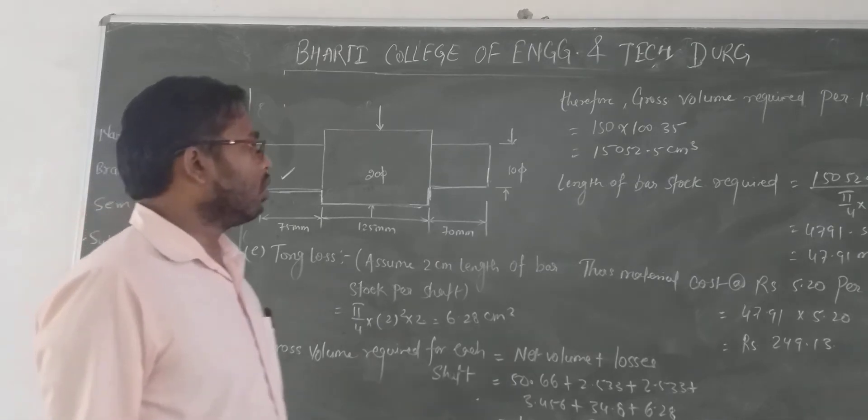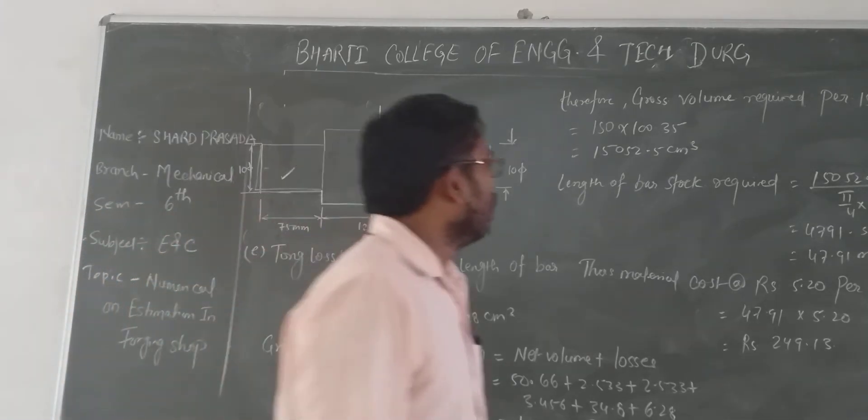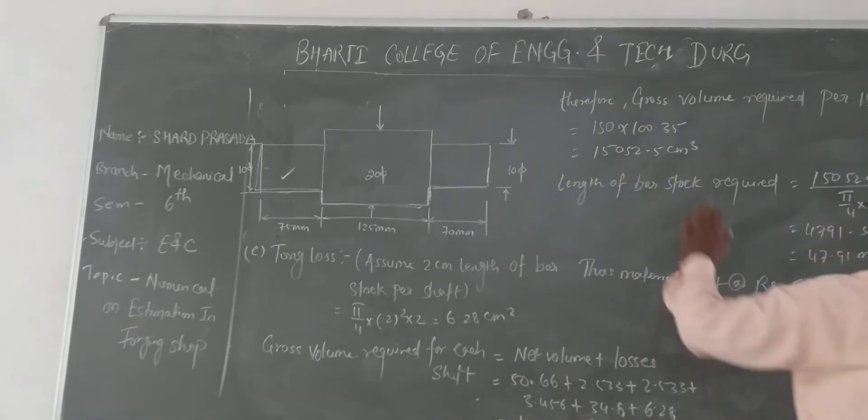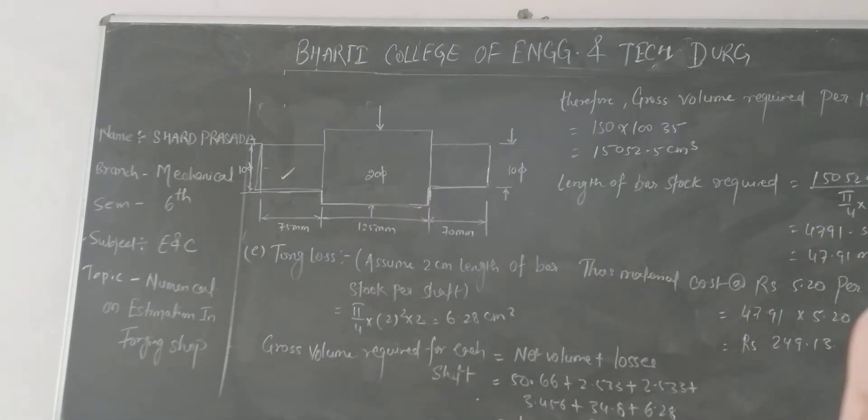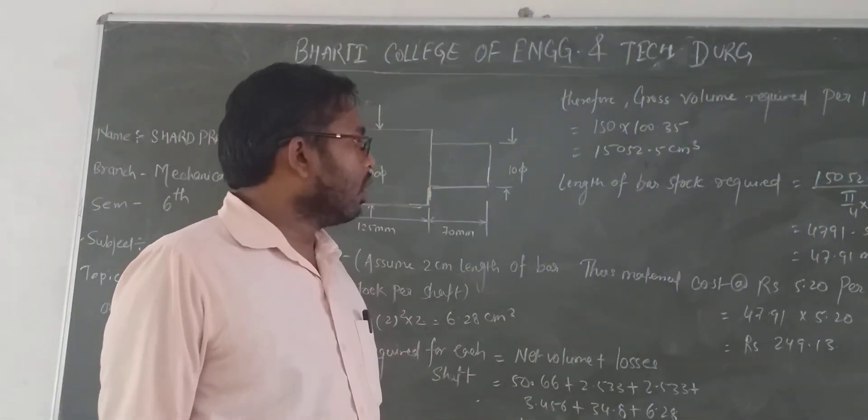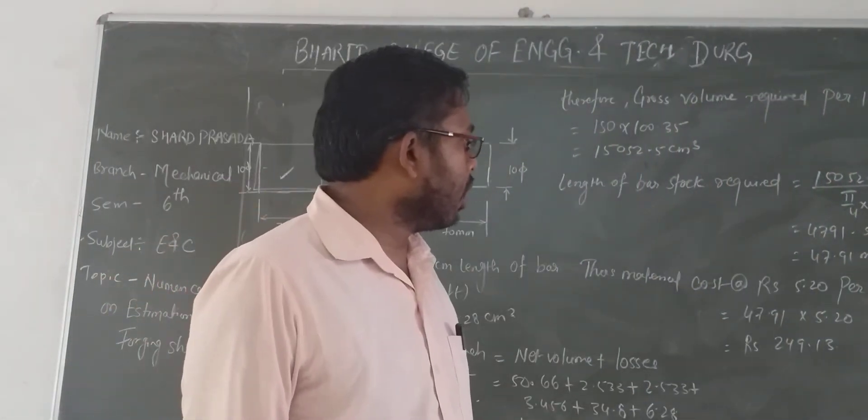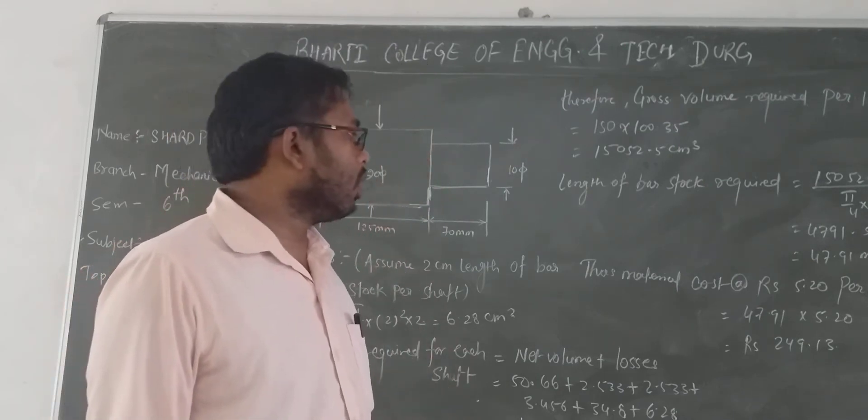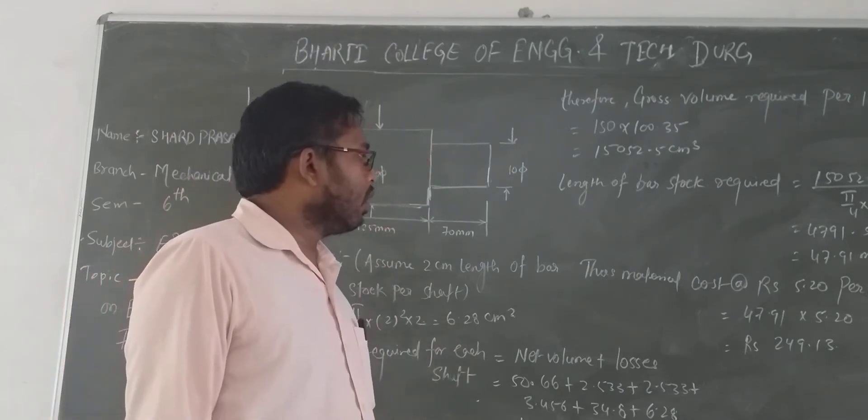Length of bar stock required: 15,052.5 divided by π/4 × d², where d equals 2 cm. This gives 4791.35 cm. Converting to meters: 47.91 meters.